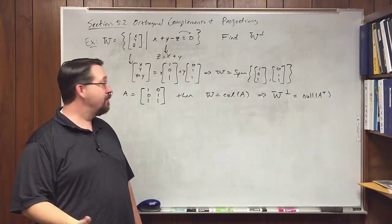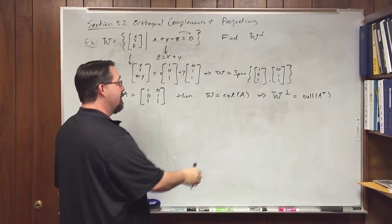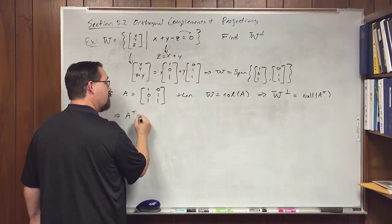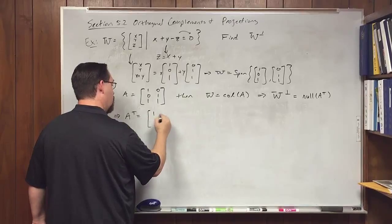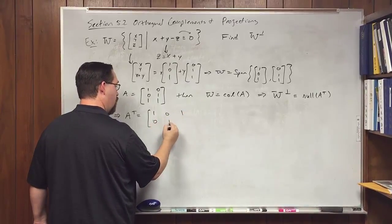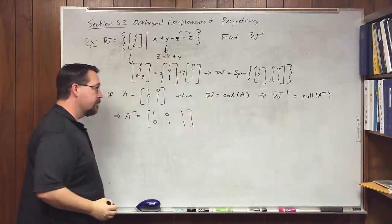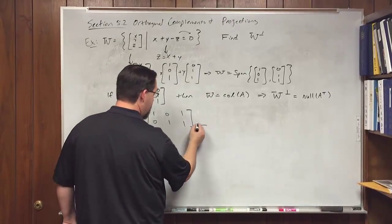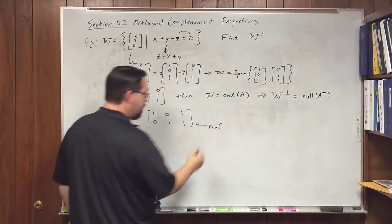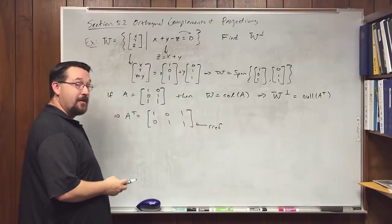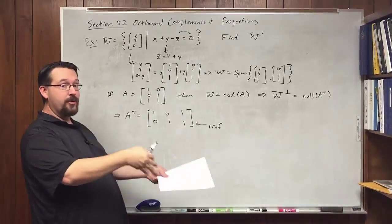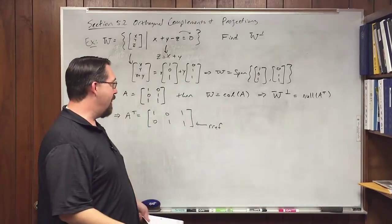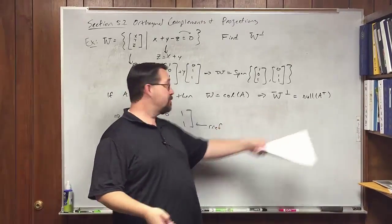We can find W⊥ by taking this matrix and turning it on its side. A transpose is the 2×3 matrix with rows (1,0,1) and (0,1,1). In this case we got lucky — this is already in reduced row echelon form. If it wasn't, we would go through and reduce it, then write the basis for the null space.